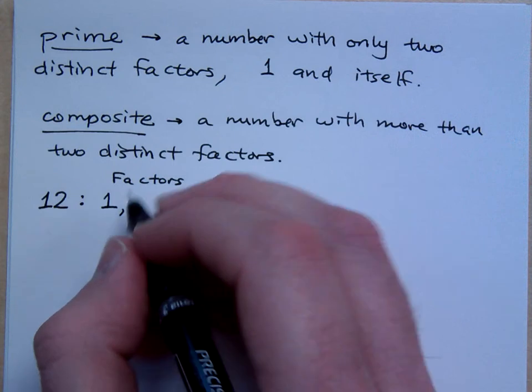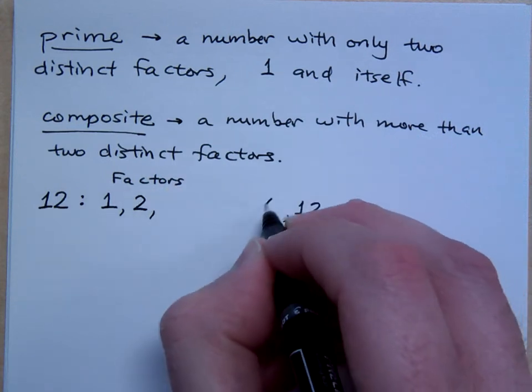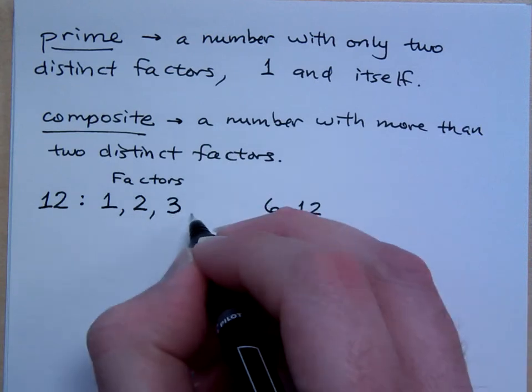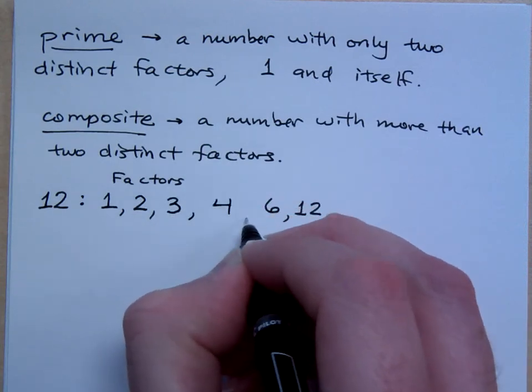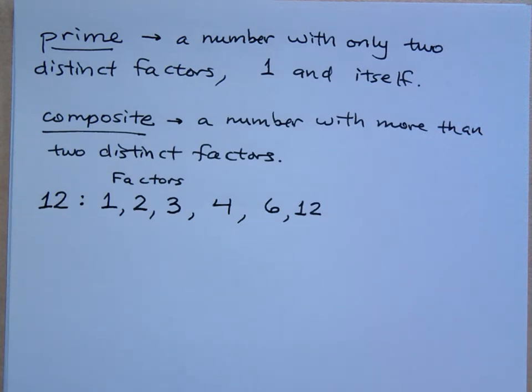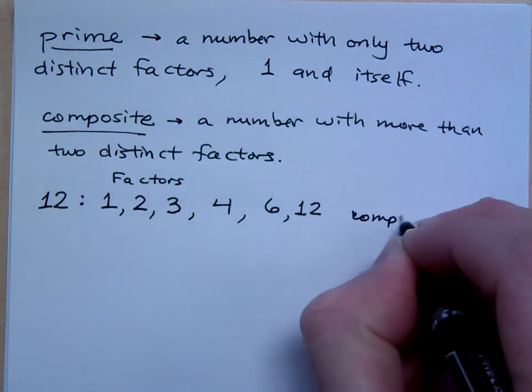After one, I would try two. Does two go into 12? Yes. Two goes into 12 six times. After two is three. Does three go into 12? Three goes in four times. These are all the factors for 12. So is 12 prime or composite? 12 is a composite number.